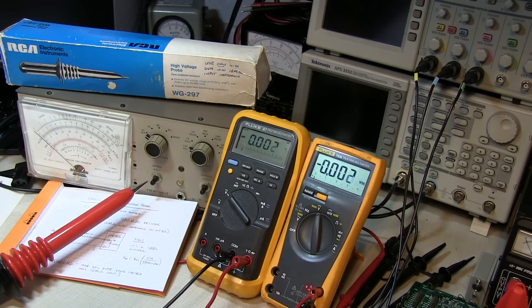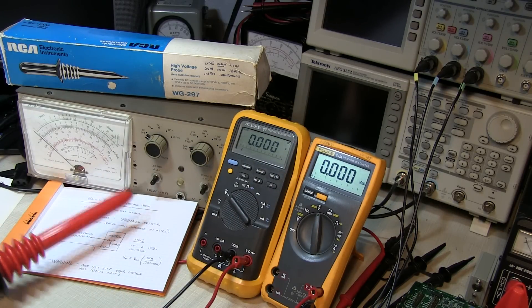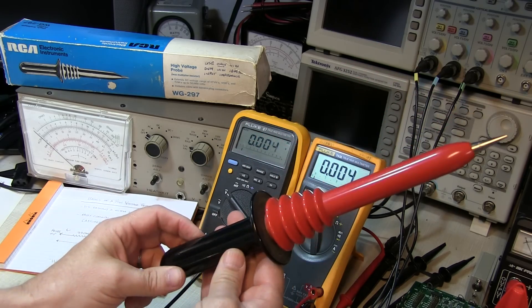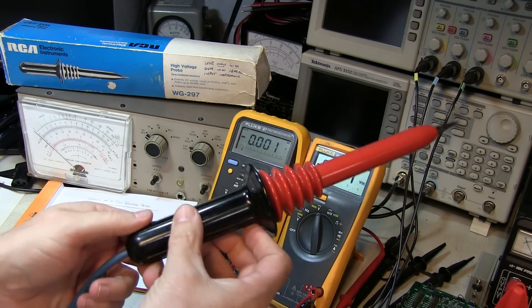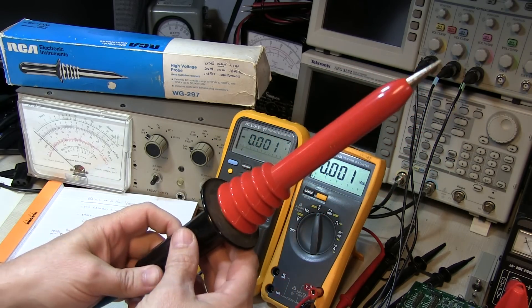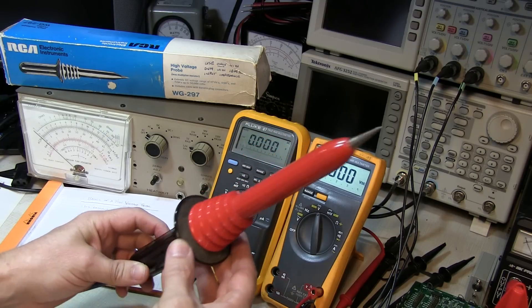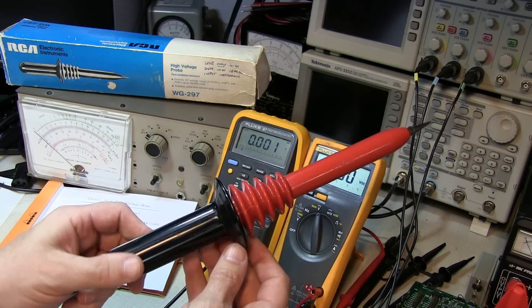More commonly you're going to run across probes like this one here. This one is made by RCA, but you'll see them made by Fluke and some other folks as well. So let's talk about what these things are made of first.